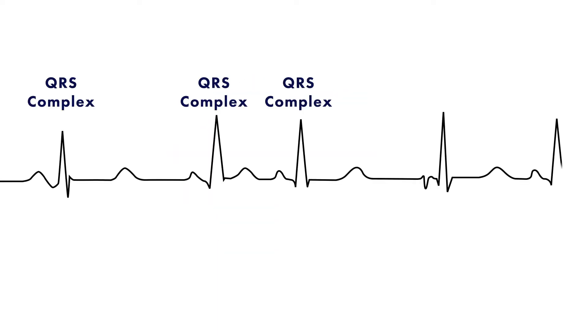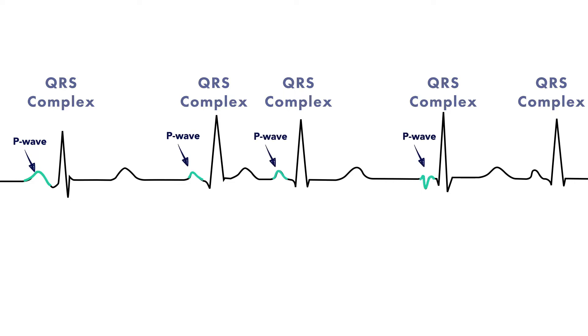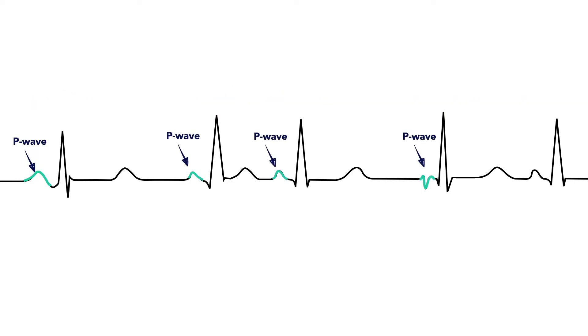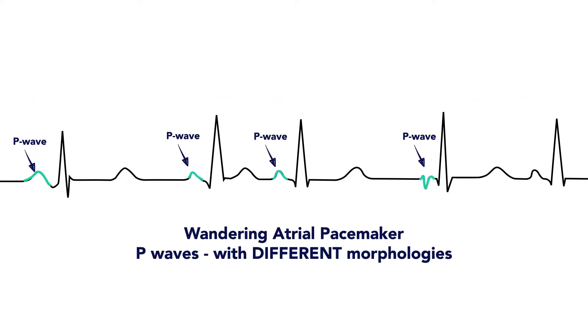This translates to each QRS complex being preceded by a P wave, but each P wave will have a different morphology or shape, since it's originating from a different area.